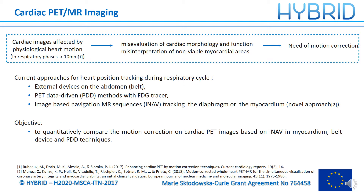This is why motion correction is necessary in cardiac PET image processing. The first step in motion correction is to track the position of the heart during the respiratory cycle along the acquisition. To do this, common approaches use external devices on the abdomen such as belt or bellows, PET data-driven methods with FDG tracer, or in the context of PET/MR systems, dedicated MR sequences such as image-based navigation or INAP that track the position of the diaphragm or the myocardium directly, as was proposed in a recent study.